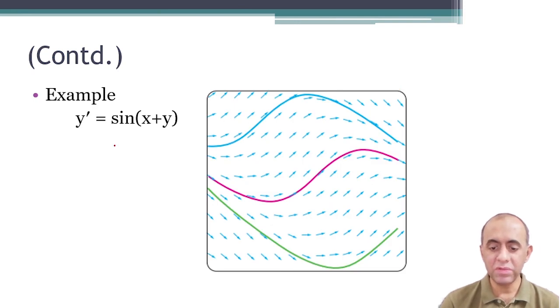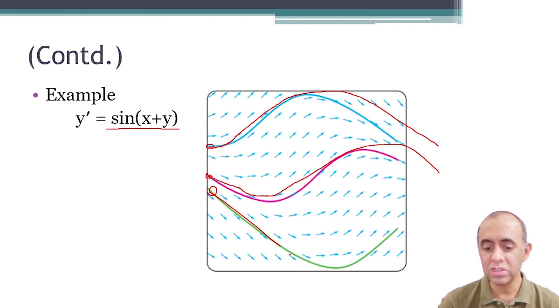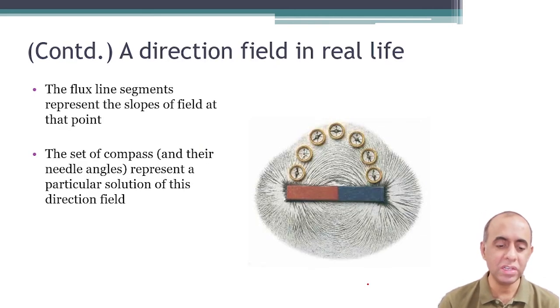This is another example of direction field which is for sin(x) + y, and you can see that if we start from this point the particular solution takes this form. If we start from this point the solution takes this form. If we start from this point the solution takes a very different form again. One of the things I found interesting was that when you draw flux lines using a magnet and iron particles...